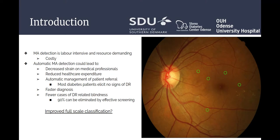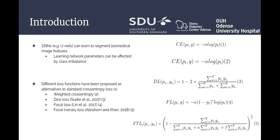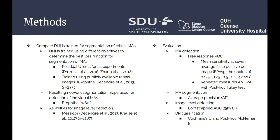Deep neural networks, such as U-Nets, can learn to segment biomedical image features, but learning network parameters can be affected by class imbalance. Different loss functions have been proposed as alternatives to the standard cross-entropy loss, such as weighted cross-entropy, Dice loss, focal loss, and focal Tversky loss. We compare deep neural networks trained for segmentation of retinal MAs, training the network using different objective functions to determine the best loss for segmentation of microaneurysms. The resulting network segmentation maps are used for detection of individual MAs, as well as for image-level detection.